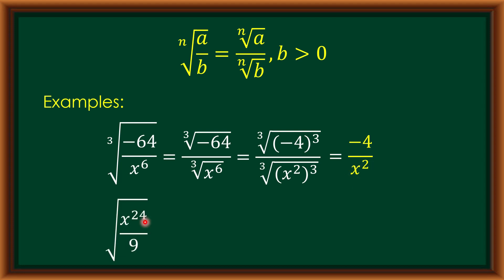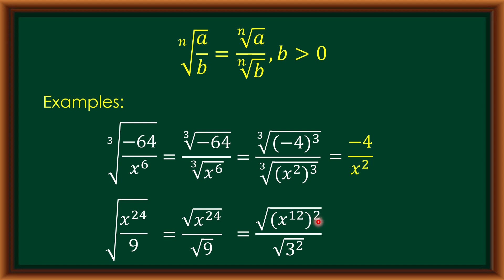Another example: the square root of x raised to 24 over 9. Applying our law, this equals the square root of x raised to 24 over the square root of 9. In exponential form, we have the square root of x raised to 12 times 2 — since x raised to 12 times 2 equals x raised to 24 — over the square root of 3 squared, where 3 squared equals 9. Applying the first law, where the index and exponent are equal, we get the bases. Therefore, the answer is x raised to 12 over 3.